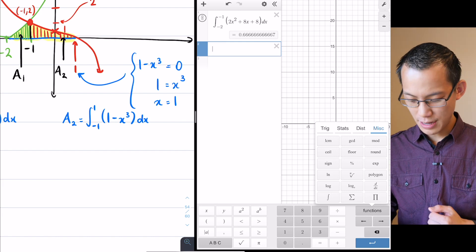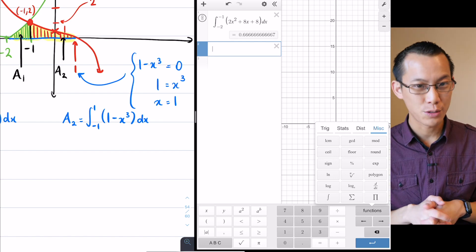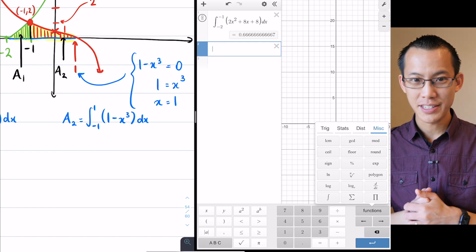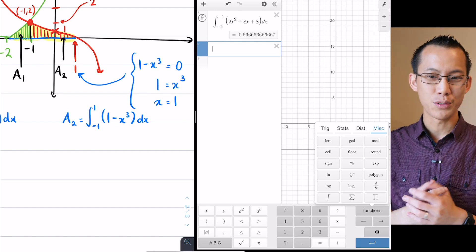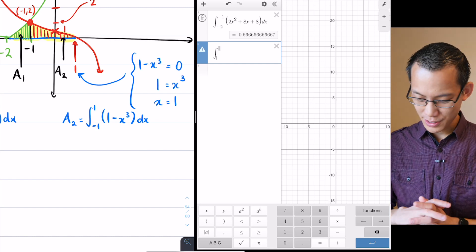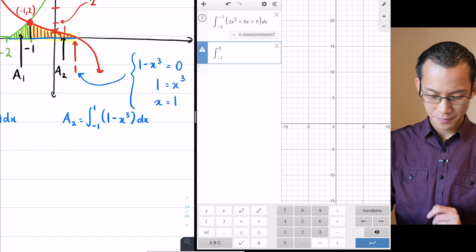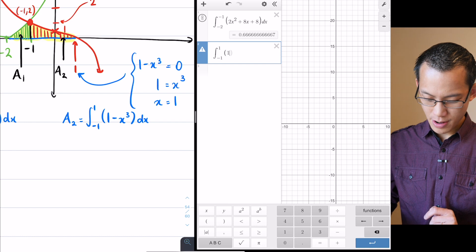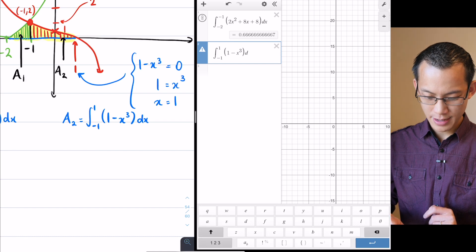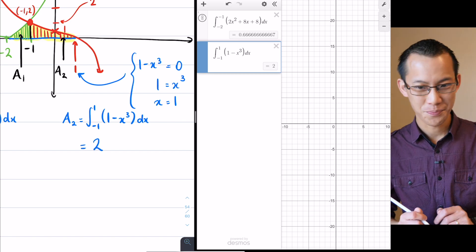You're gonna get two-thirds there and then when you go over to the other integral over here I'm gonna put this on a whole new line. Let's get A₂ which is the integral underneath the cubic, so that's from negative 1 all the way up to 1. Pop in your brackets there, close your brackets, and then go with respect to x and you get a very nice neat value of 2.